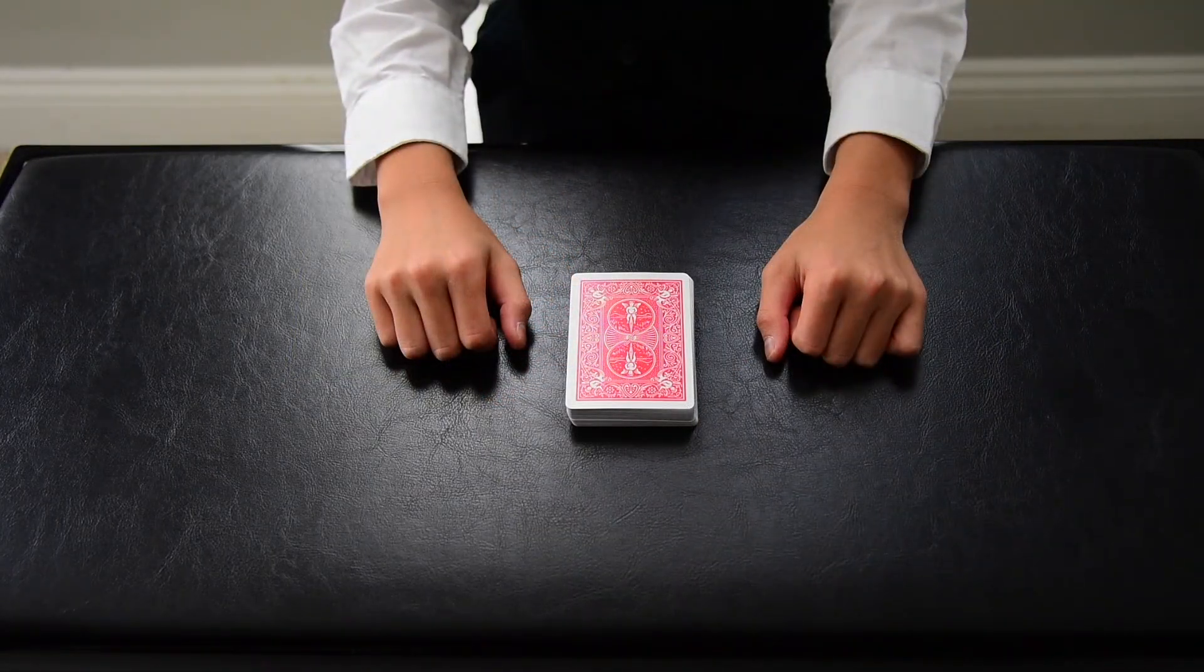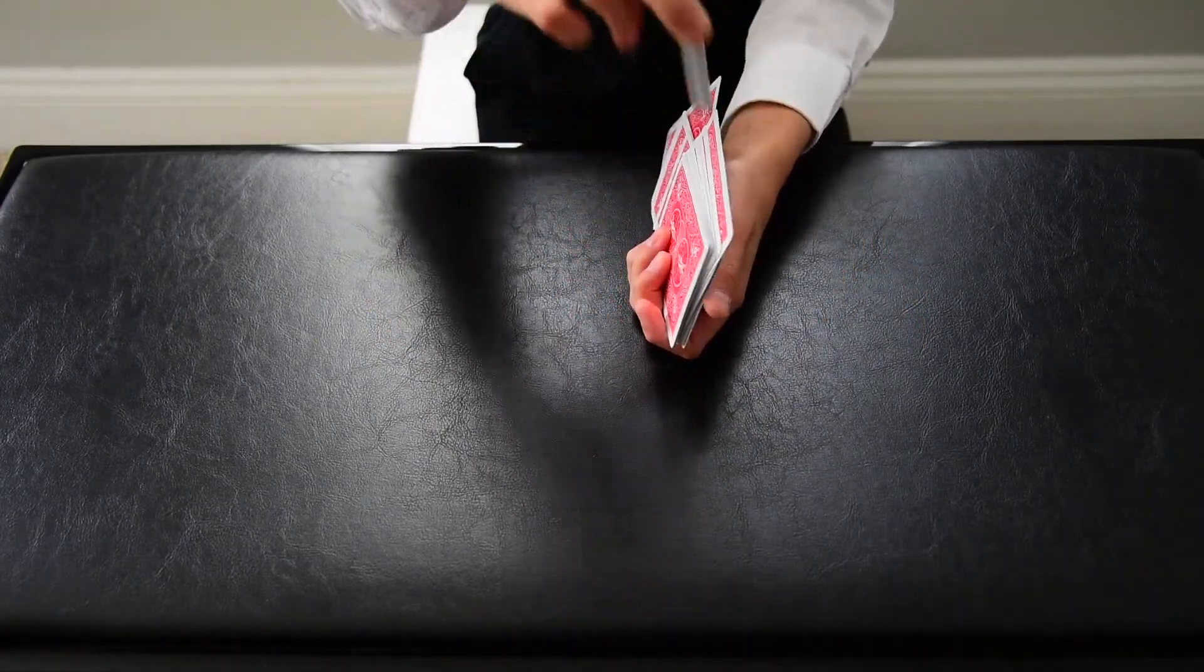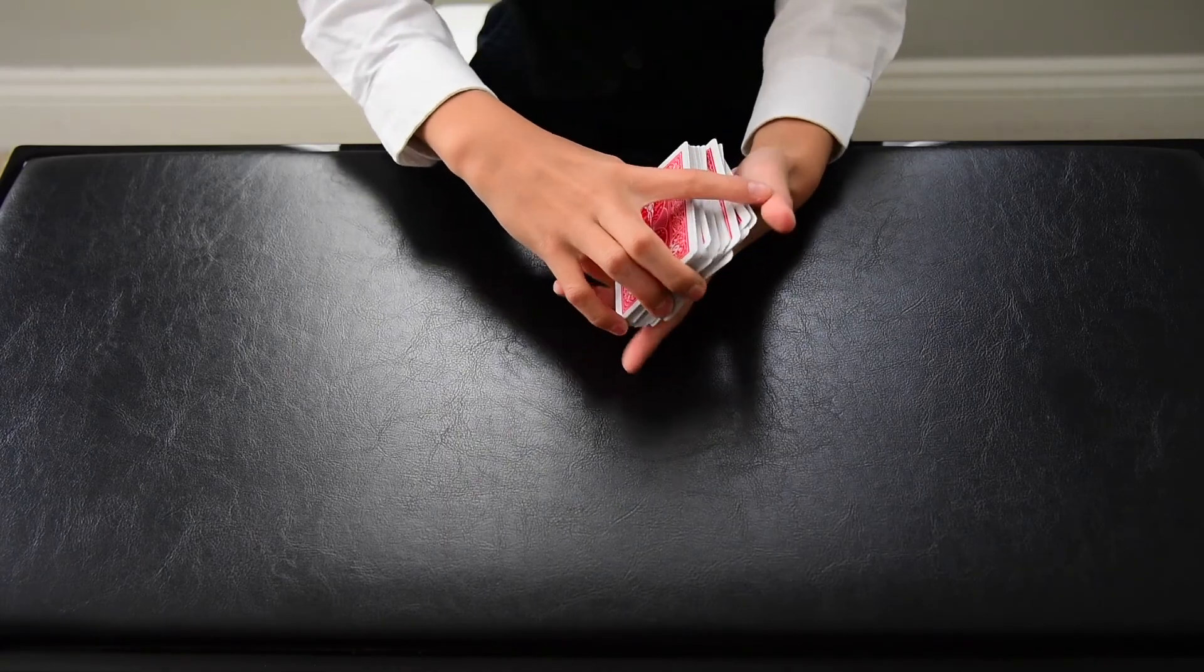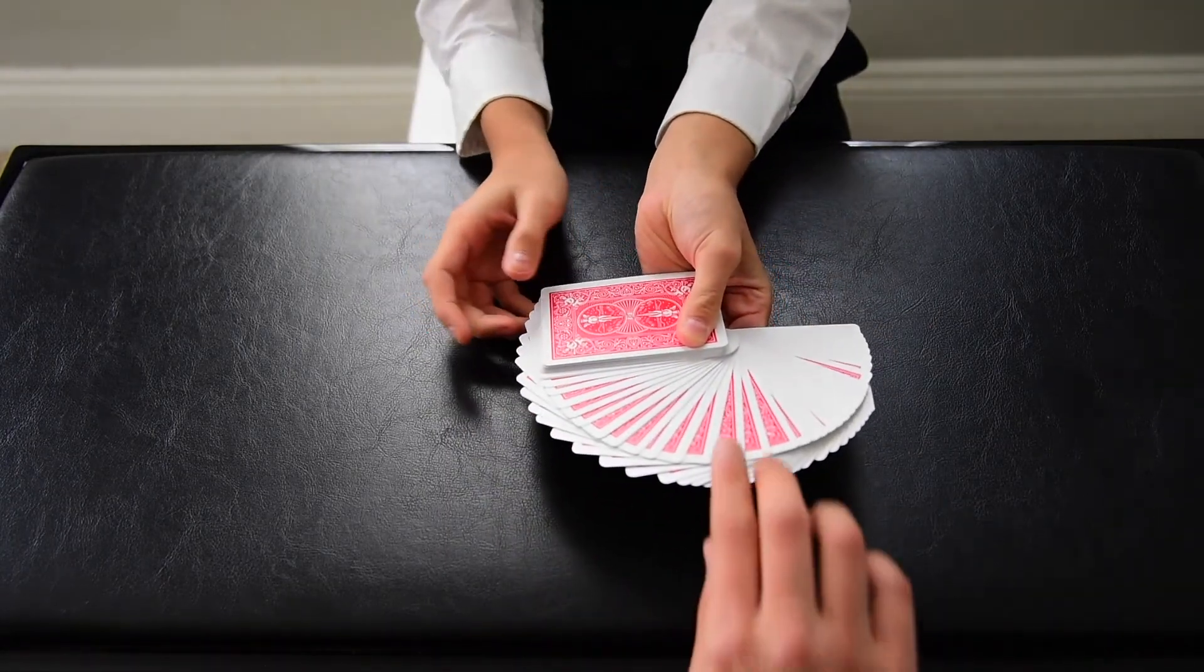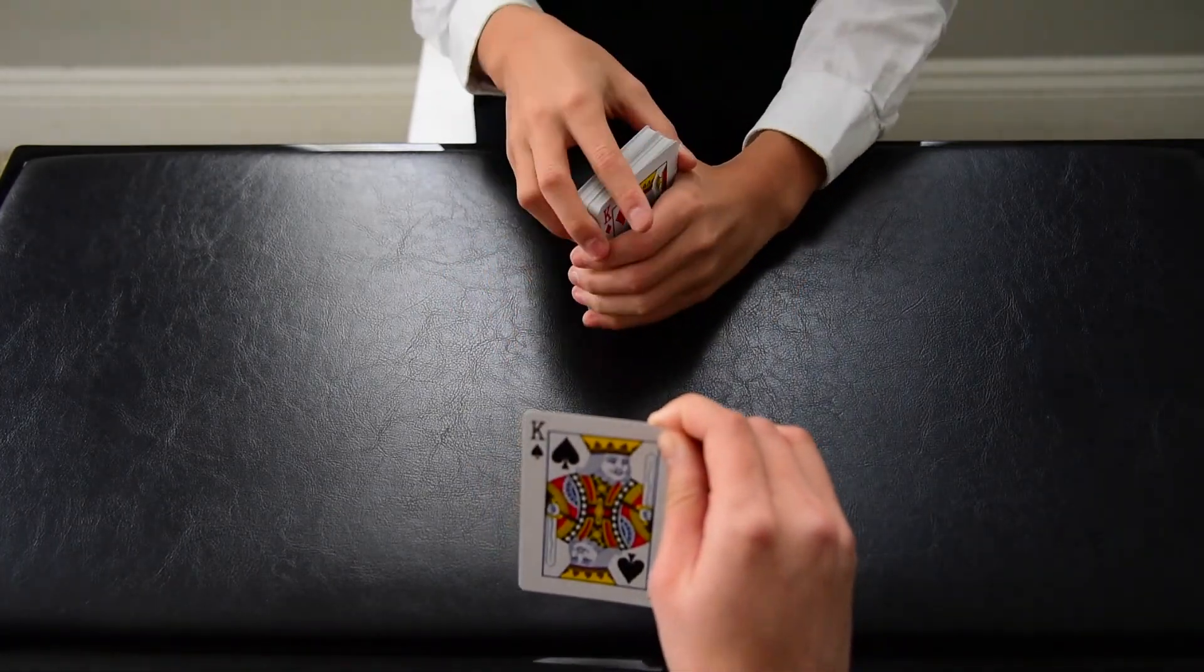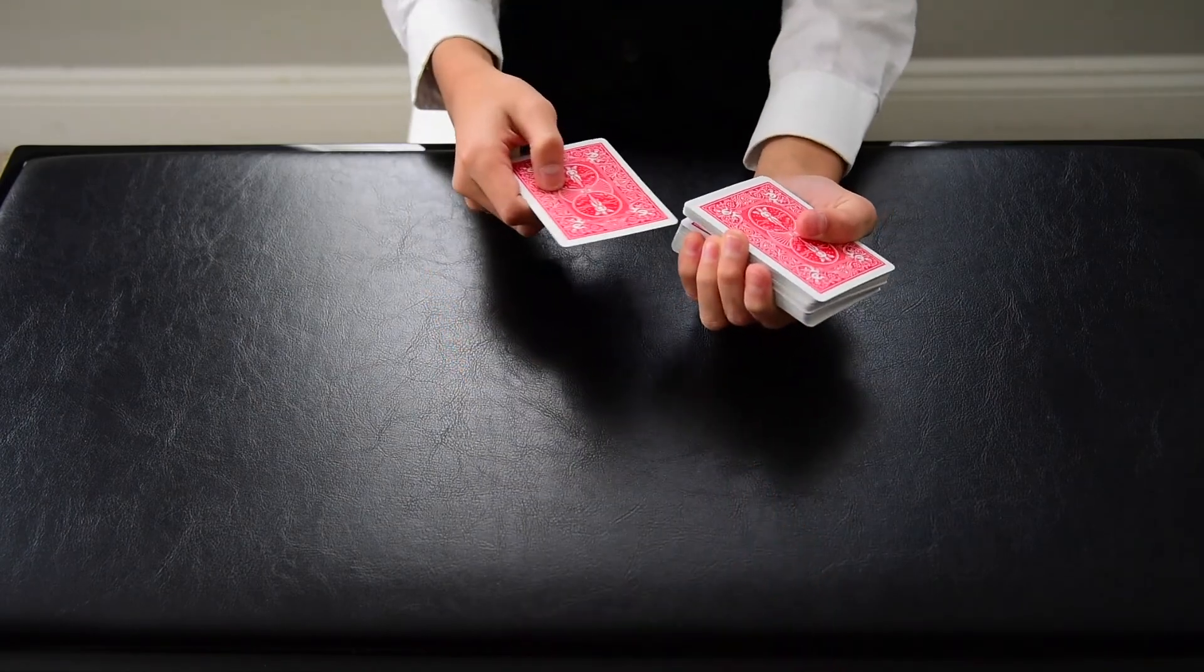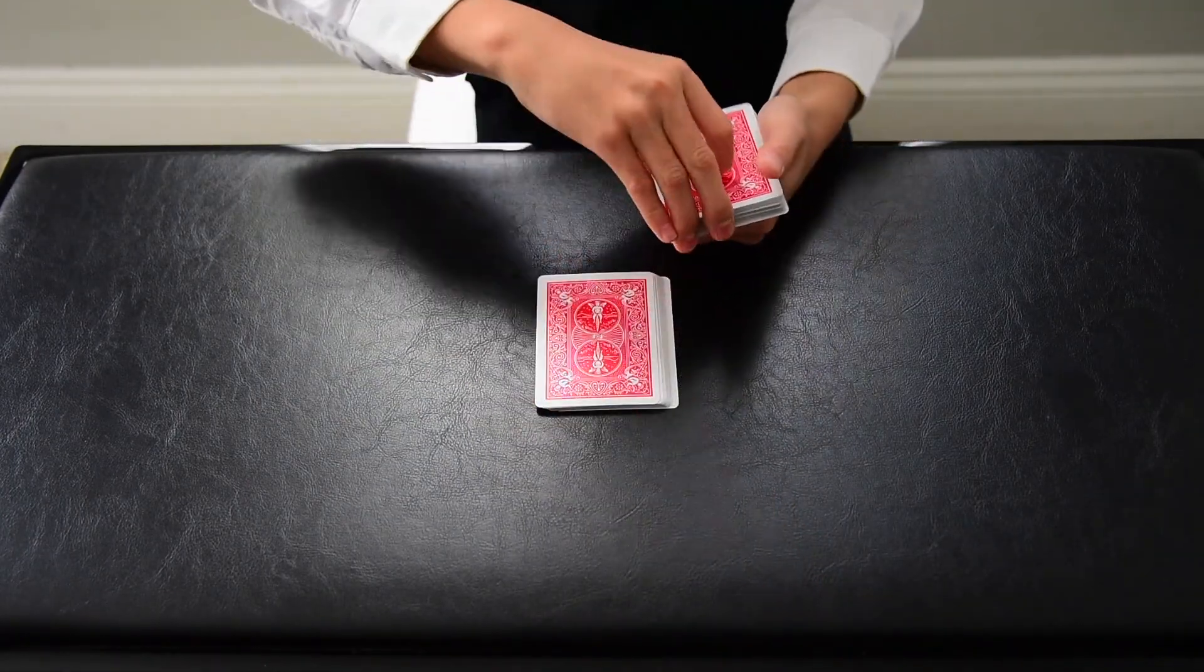This last card trick is a favorite of mine. So we begin by giving the deck a quick shuffle. Once we are done, I ask my spectator to select any card. This is a free selection, and I promise I'm not looking. We stick the card into the middle of the deck. We give the deck a quick cut.